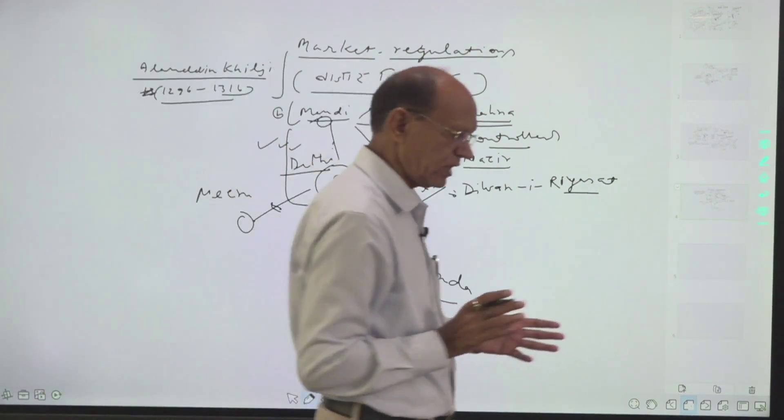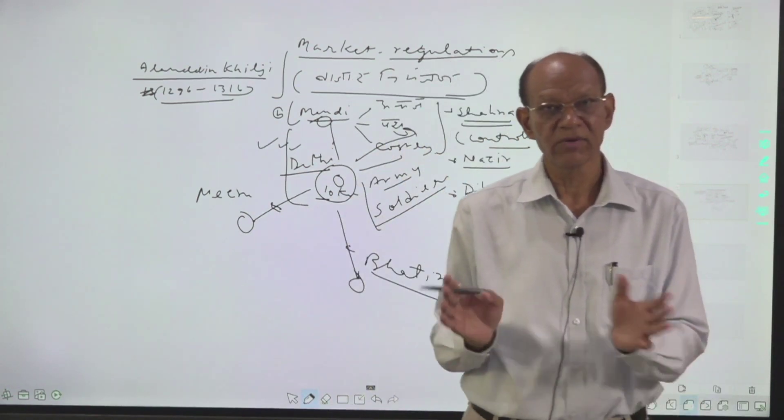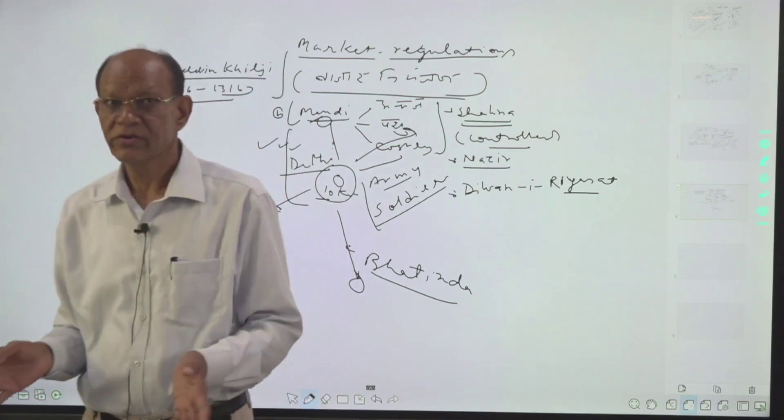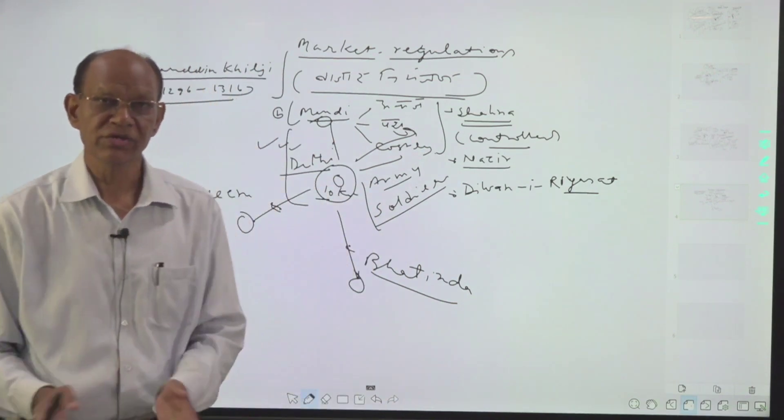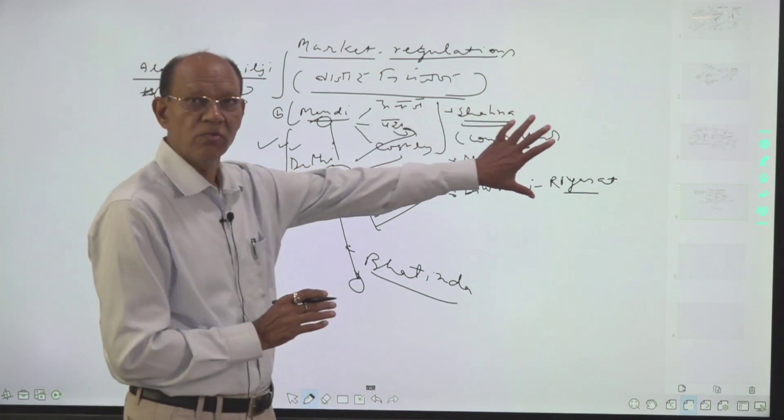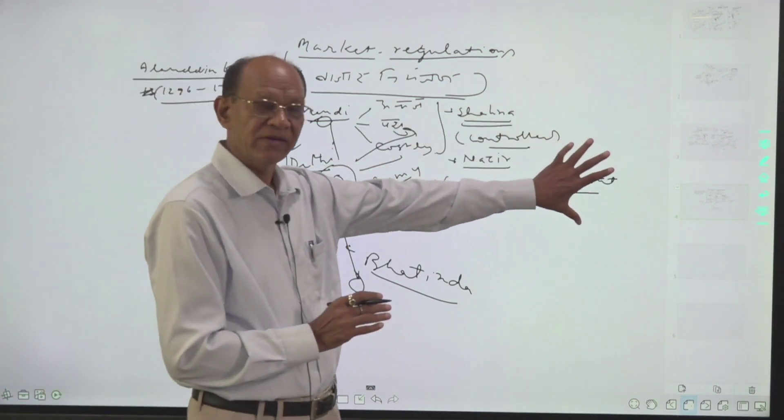How can we define the market regulations? Market regulations means the control of the markets, control of the mandis, control of the prices, control of the weights and measures. That's why they had a whole administrative agency made.